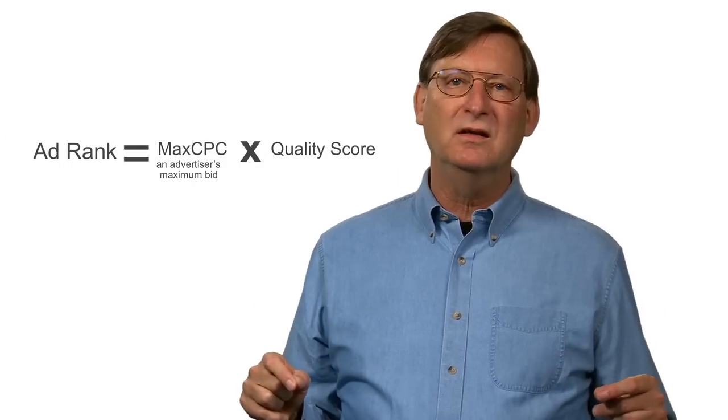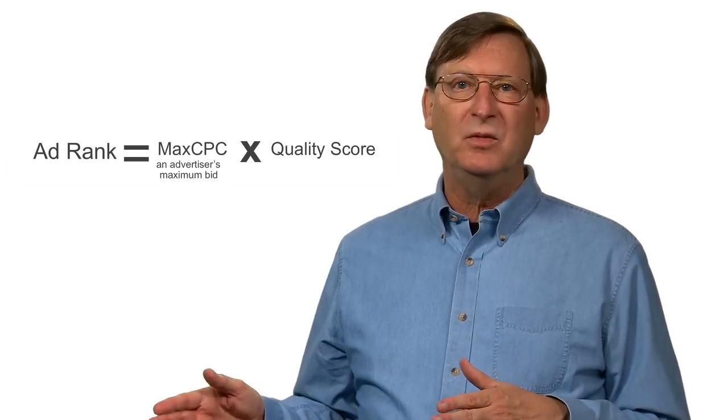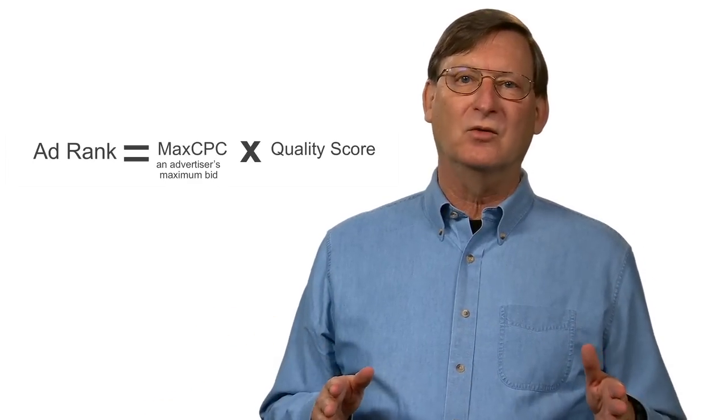To see this more clearly, let's look at how ad rank is calculated. For AdSense sites, ad rank is calculated by multiplying the advertiser's maximum bid by the quality score. So ad rank equals maximum CPC times quality score.